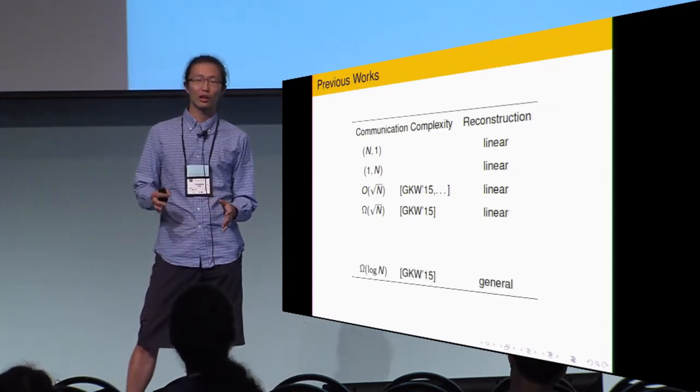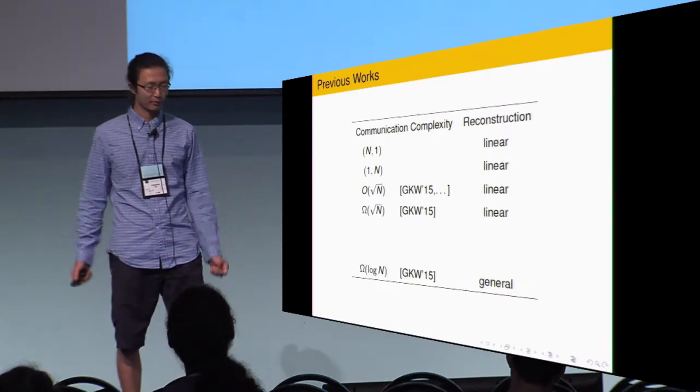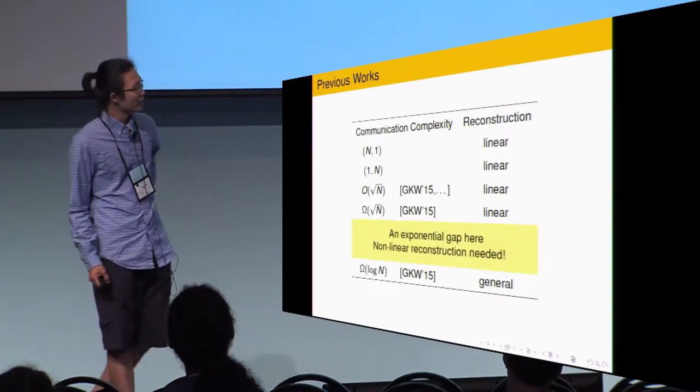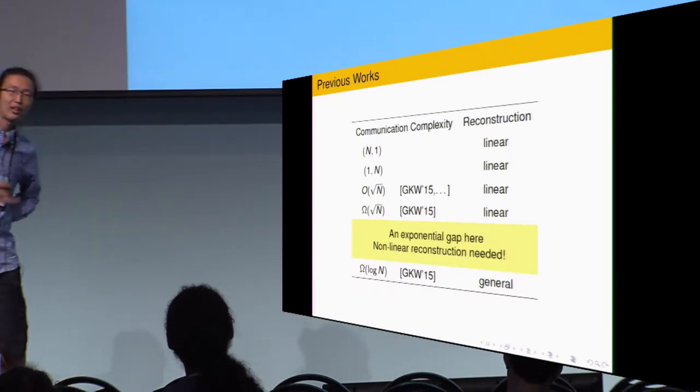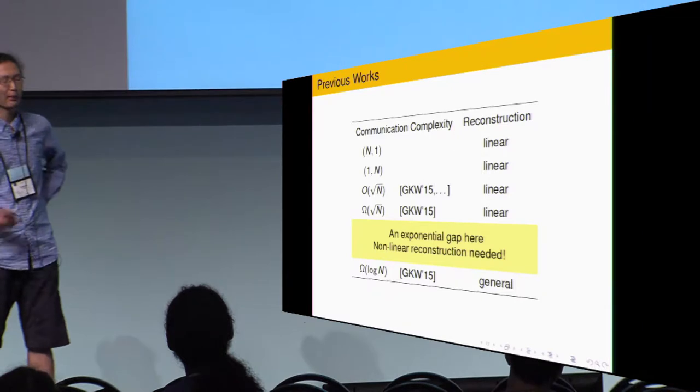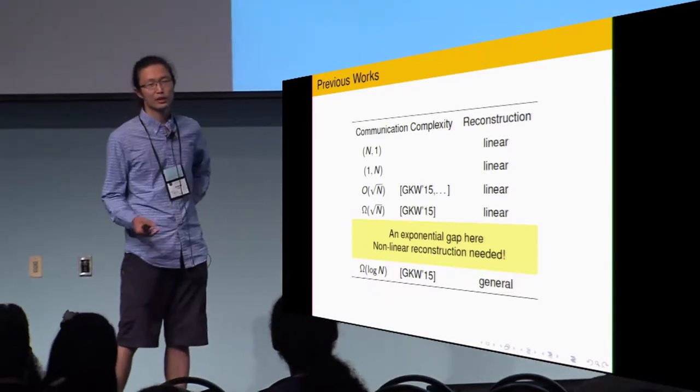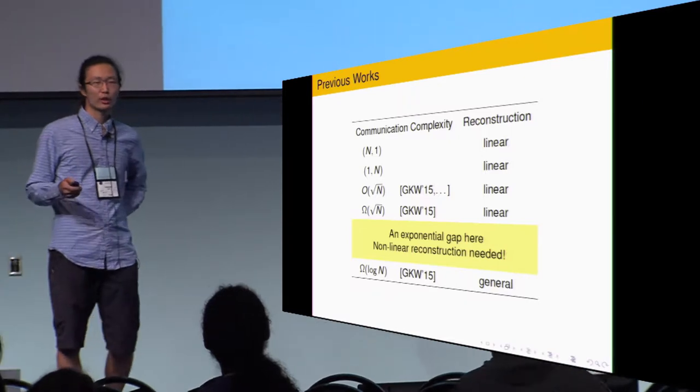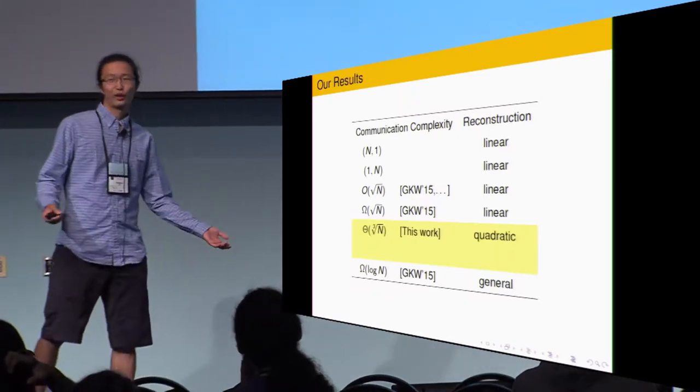In the same paper, they show a log n lower bound for unrestricted reconstruction. So, as you can see, there is an exponential gap between the lower bound and the best reconstruction. If you want to improve it and get a better CDS, you need the reconstruction to use some nonlinear technique.